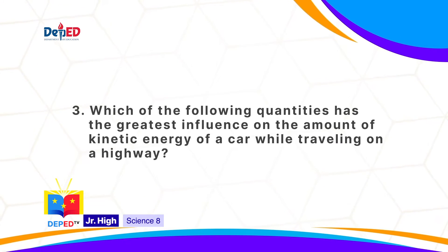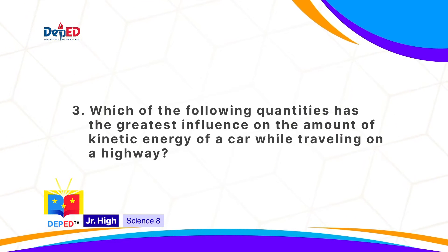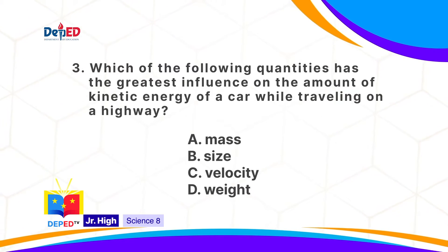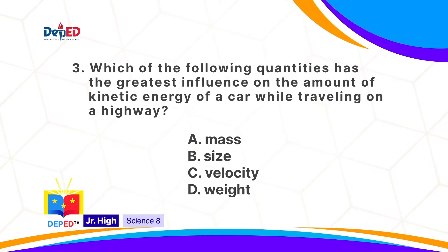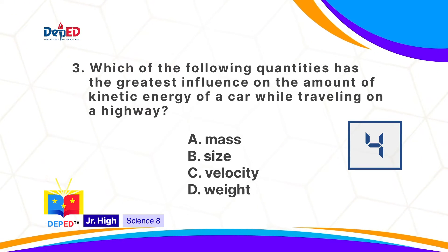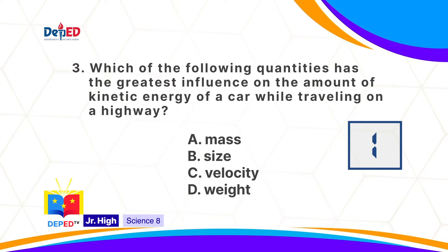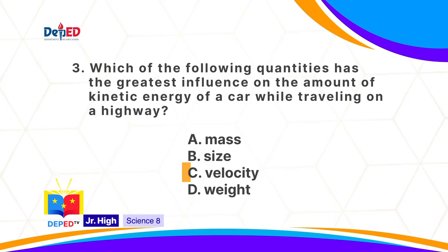Which of the following quantities has the greatest influence on the amount of Kinetic Energy of a car while traveling on a highway? A, mass. B, size. C, velocity. D, weight. The correct answer is C: velocity.